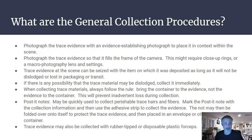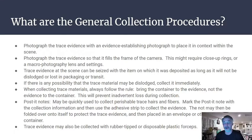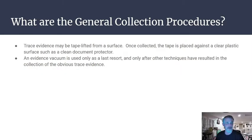Post-it notes may be used to quickly collect perishable trace hairs and fibers — mark the post-it with collection information and use the adhesive strip to collect the evidence, then fold it over and place it in an envelope. Trace evidence may also be collected with rubber-tipped or disposable plastic forceps, or with gloved fingers. Tape lifting from surfaces is another option — once collected, the tape is placed against a clear plastic surface like a document protector. Evidence vacuums can be used but are usually a last resort, typically in the lab.